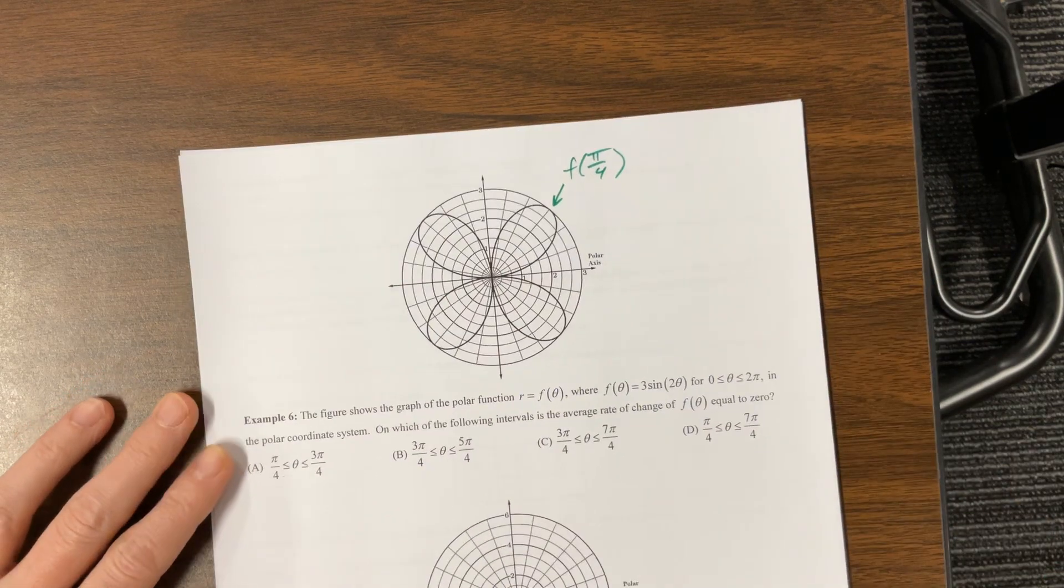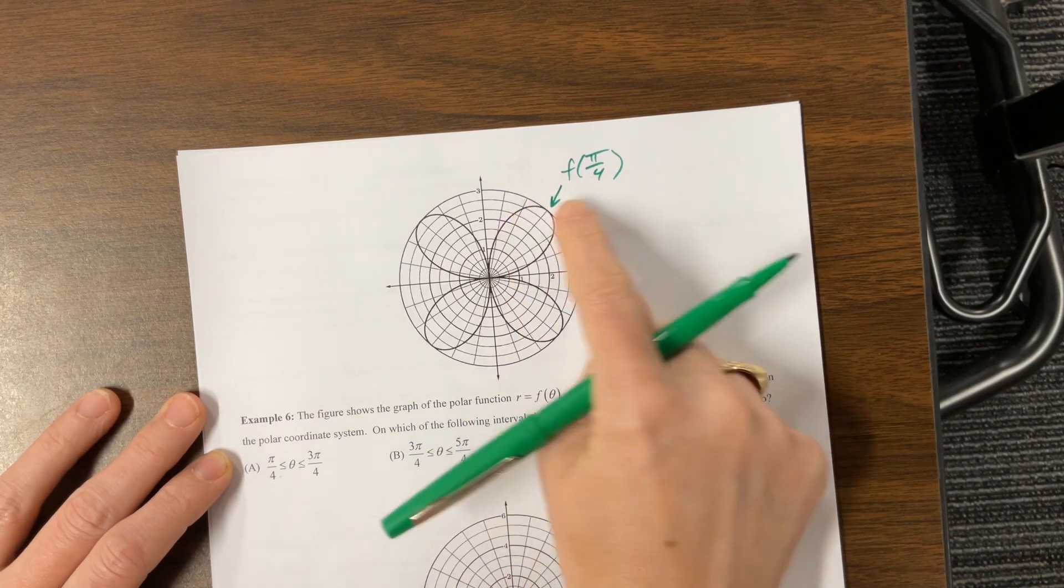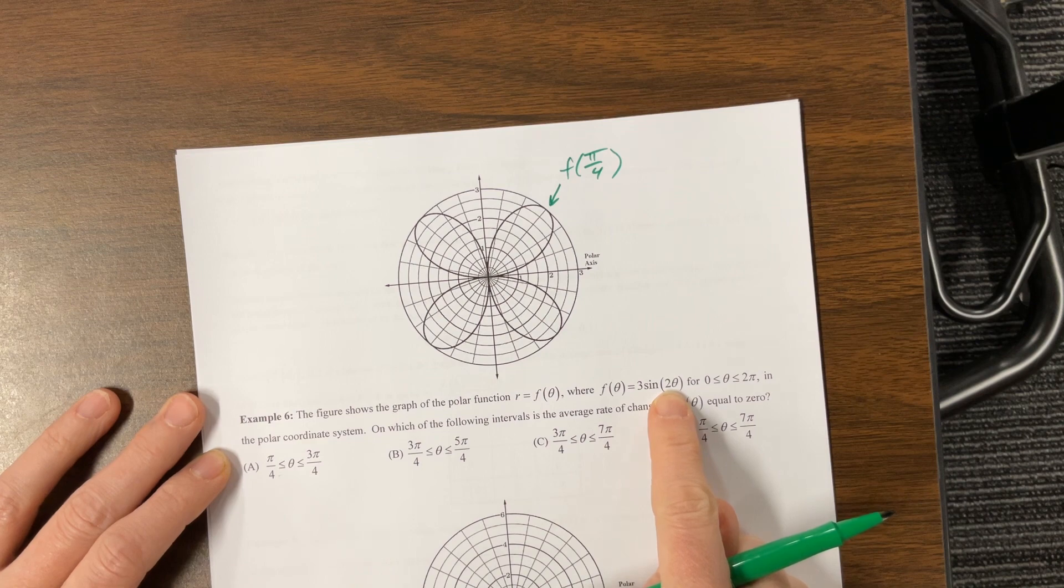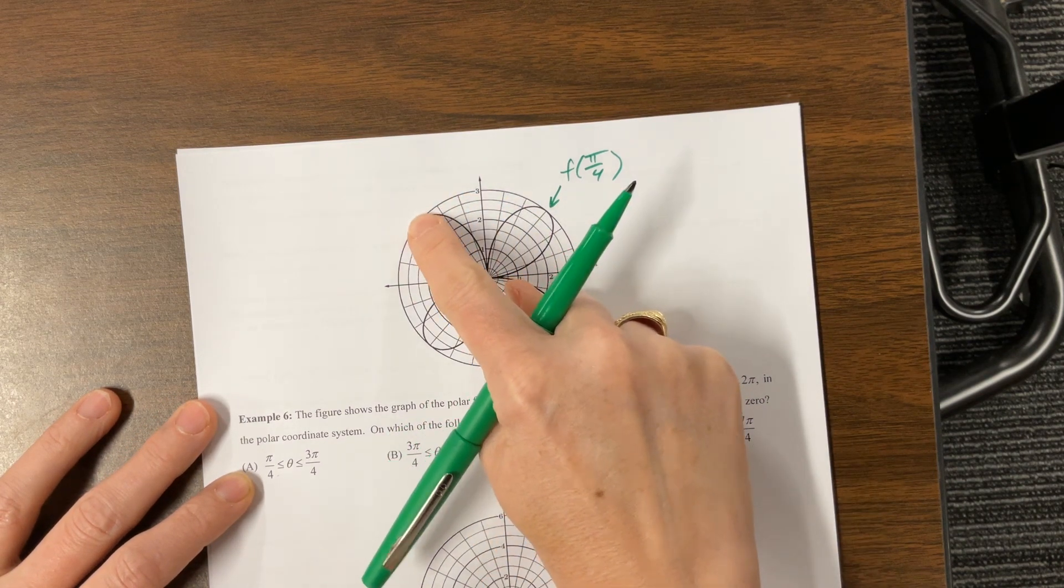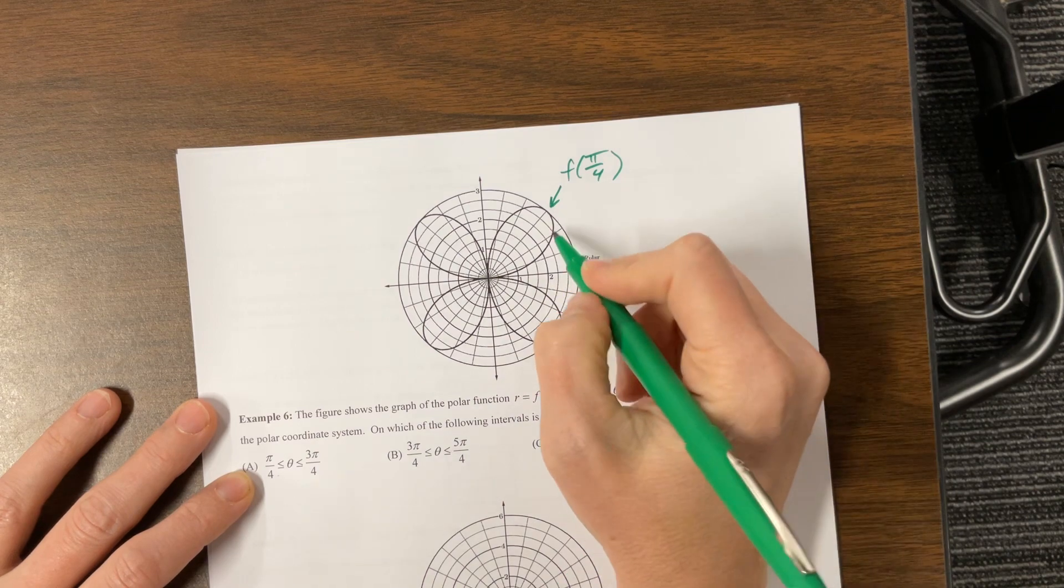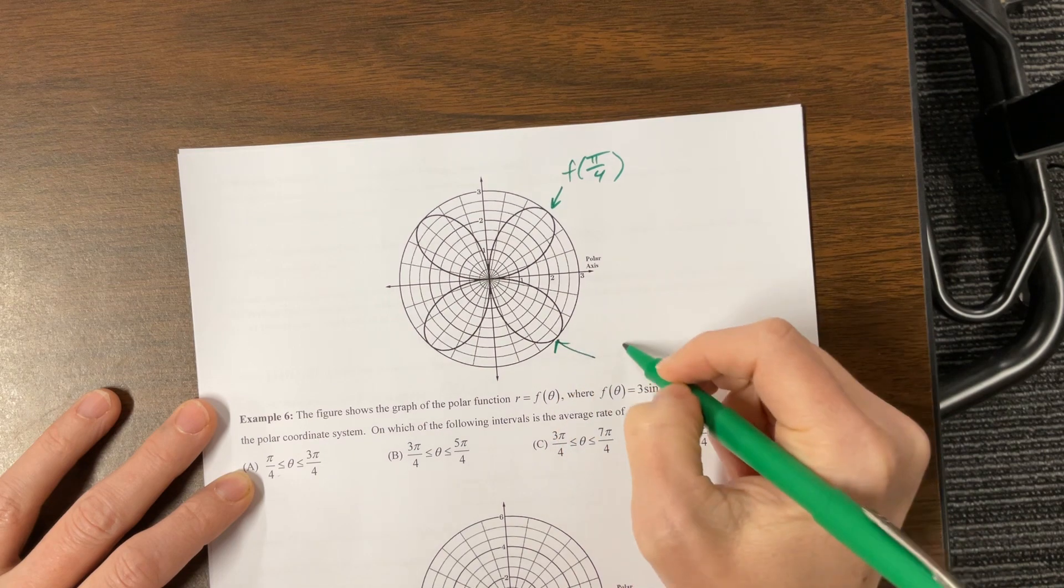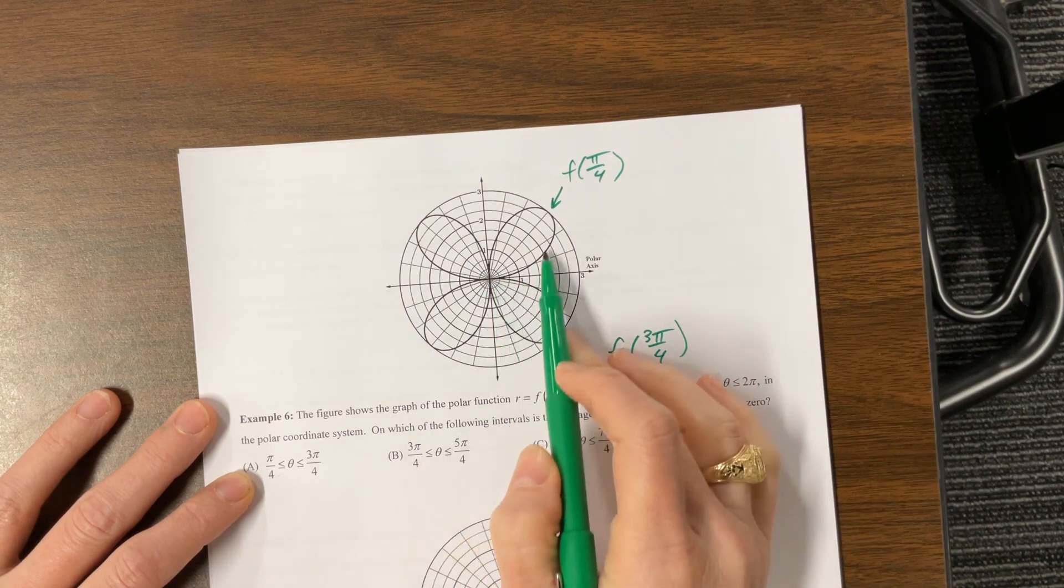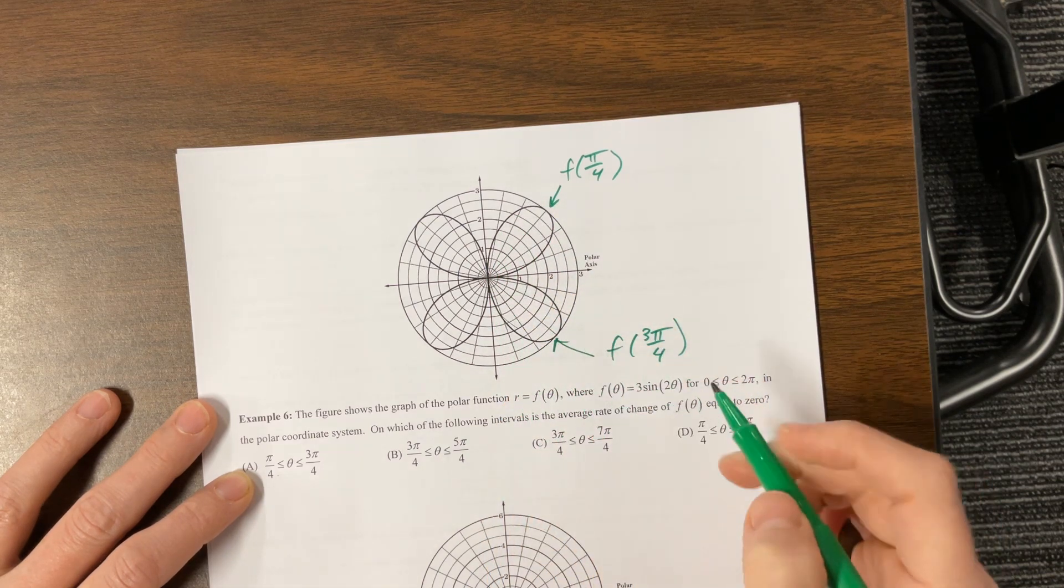Then 3 pi over 4, when I plug in 3 pi over 4, I get sine of 3 pi over 2, which is negative 1, so this is negative 3. So 3 pi over 4, but instead it's negative, so it started here, it curved up and around, and it came down to here. This is f of 3 pi over 4. So we started here, we curve down here, here's 3 pi over 4. And now let's see, then we want to look at 5 pi over 4.